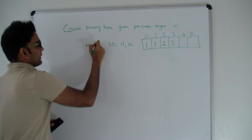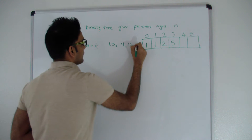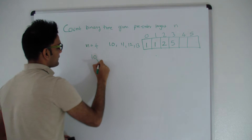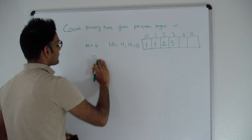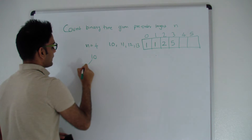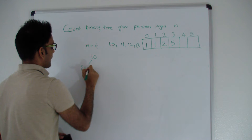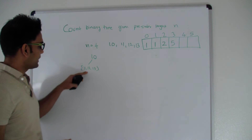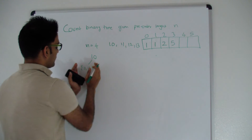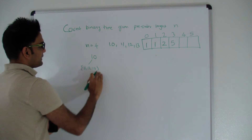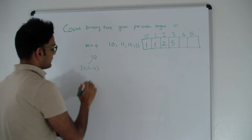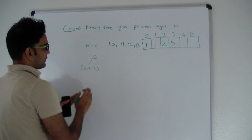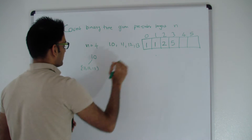Let's work for n equal to 4, where the keys are 10, 11, 12, and 13. We know 10 is the root. If 11, 12, and 13 all go on the left side of 10, we already know how many trees those 3 keys can form — that's n equal to 3, which gives us 5 trees.